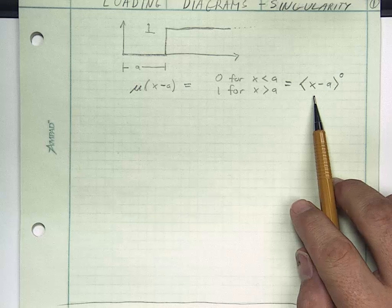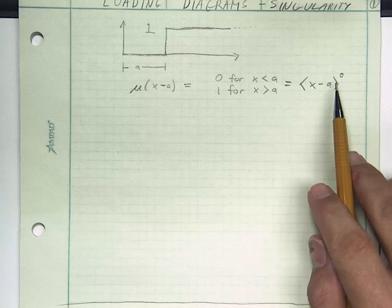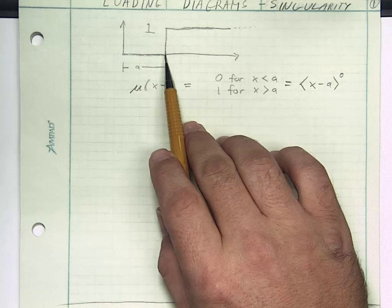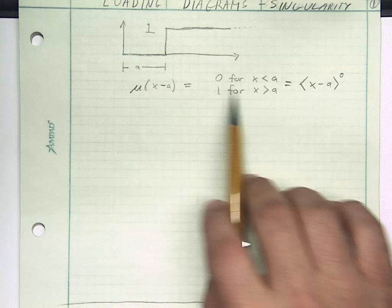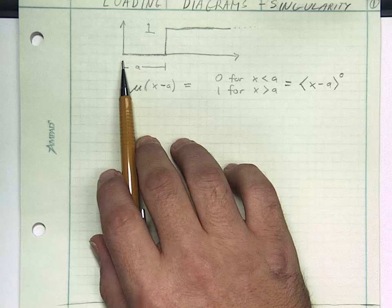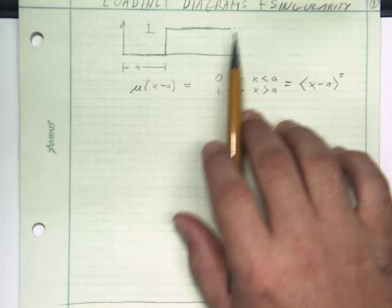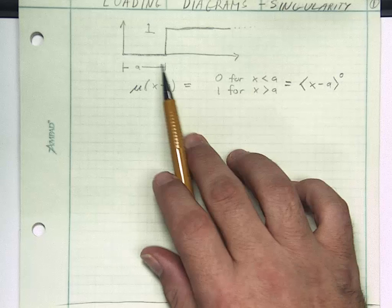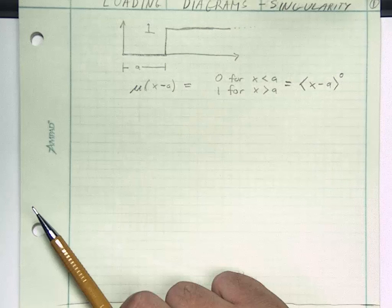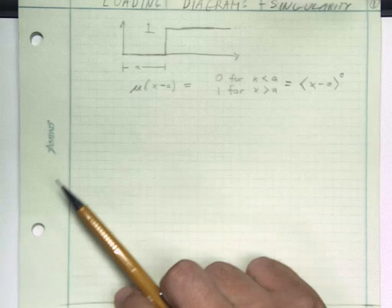Specifically some calculus, taking the derivative and the integral of this step function. The whole point is there is a singularity that occurs in the function. This function is not continuous from all the way until we get to a it's zero, all the way after a it's equal to one, and it's discontinuous at x is equal to a. This is why it's called a singularity function.